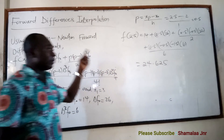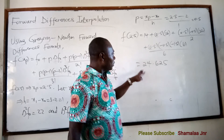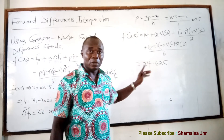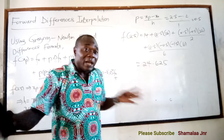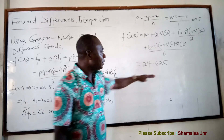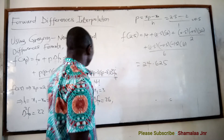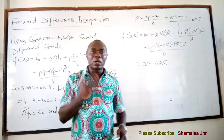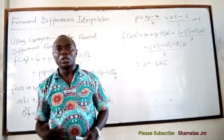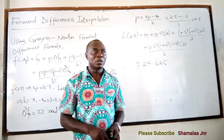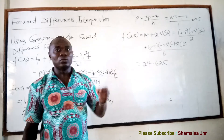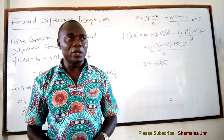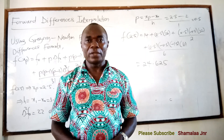The answer is 24.625, and if you check the table you can see this makes sense — we said the answer should lie between 14 and 40, and 24.625 does. This is the essence of forward differences interpolation. In my next video, we will look at backward differences interpolation, which I will liken to defenders. Thank you very much for your attention. Please subscribe to my YouTube channel, Shamala Jr.